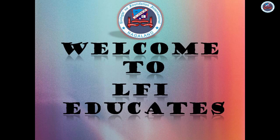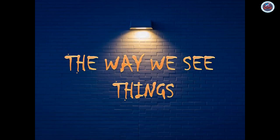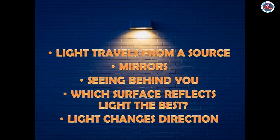Hello everyone, welcome to LFI Educates. Today we will start a new chapter, Lesson 4: The Way We See Things. The topics are: light travels from a source, mirrors, seeing behind you, which surface reflects light the best, and light changes direction.